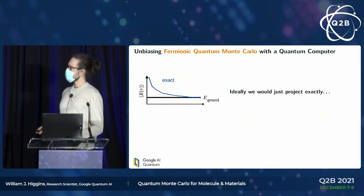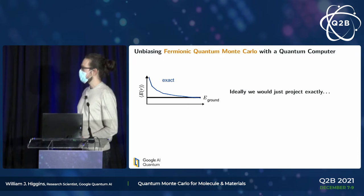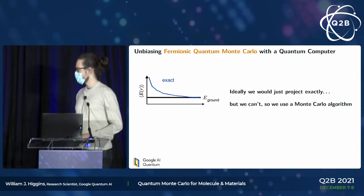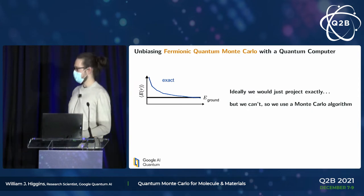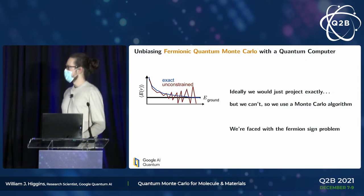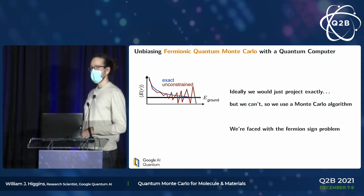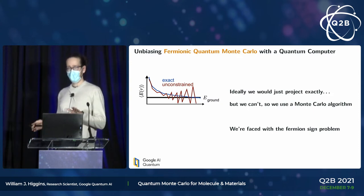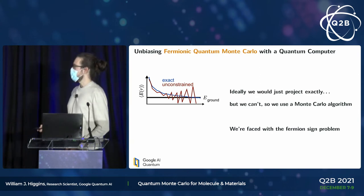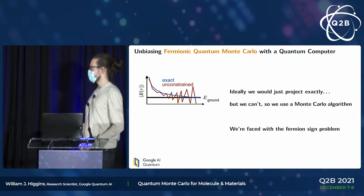In particular, this minus sign is really going to haunt us. What we would really love to do is just project exactly to the ground state — we have some estimate of the ground state energy as we advance in our computation, and we'd love to just get to the correct answer. But we can't even write down the objects we'd need directly. So we use one of these randomized algorithms. But here we run into a problem: we have these random steps, we also have these minus signs coming in from the fact that electrons are fermions, and we start to randomly accumulate positive and negative weights. The signal you're looking for gets dwarfed by the noise from these positive and negative calculations, and the computational procedure starts to look hopeless. This is what people mean when they say there's a fermion sign problem.